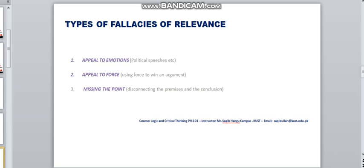Missing the Point: in this fallacy, a person disconnects the premises and the conclusion. There is no relevancy between the premises and the conclusion. This fallacy is also known as the fallacy of irrelevant conclusion or mistaken refutation. An example of this fallacy is that there are more reports of theft reported in Islamabad. More people are moving to Islamabad.